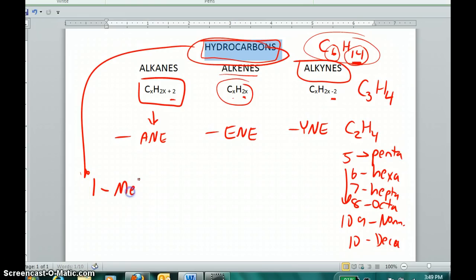Number 1 uses the prefix meth. If there are 2, instead of using the prefix di, we use the prefix eth. If there are 3 of something, instead of using tri, we use prop. And if there are 4, instead of tetra, we're going to use the prefix but.